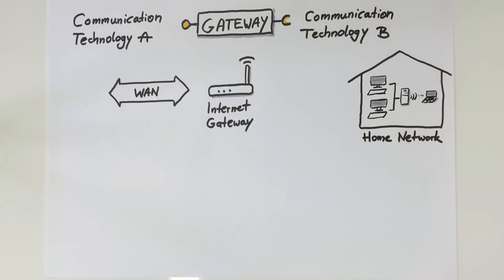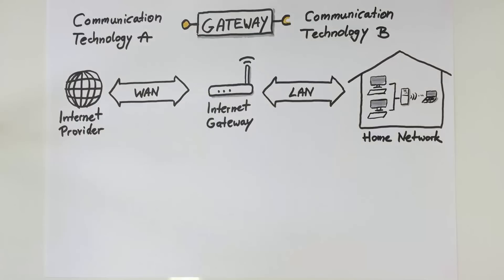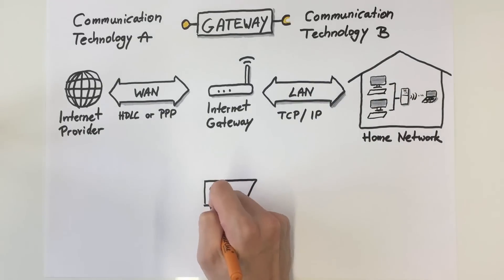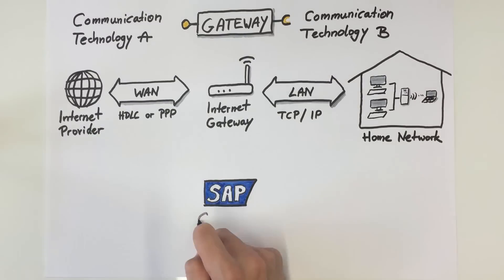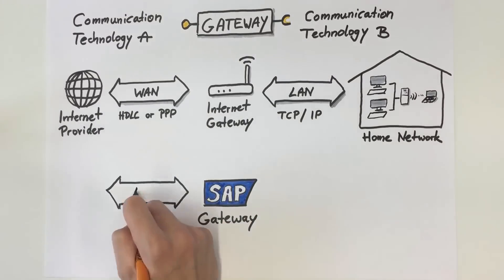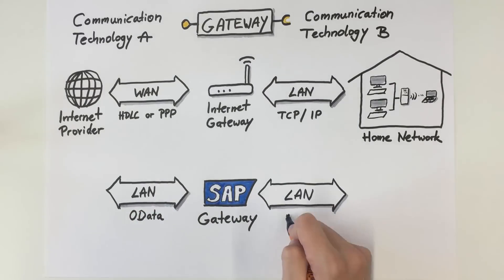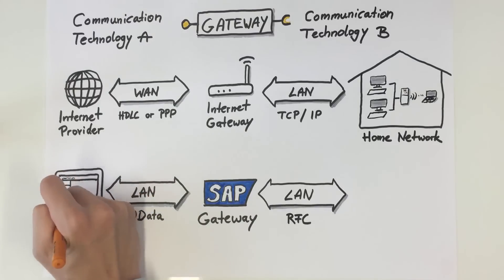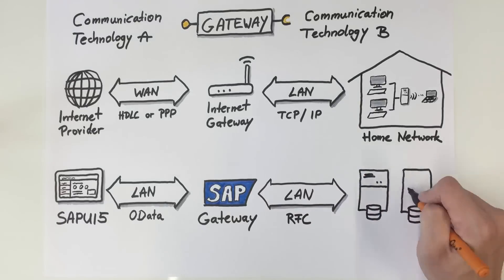Looking closer at this, we can identify the high-level data link control or point-to-point protocol used on the one side and the TCP Internet protocol on the other. If you are an SAP customer, you might be familiar with the SAP gateway. This can connect the open data protocol, OData, with remote function calls, RFCs. As such, this gateway enables SAPUI5-based applications, for example, to connect with SAP business systems in the backend.